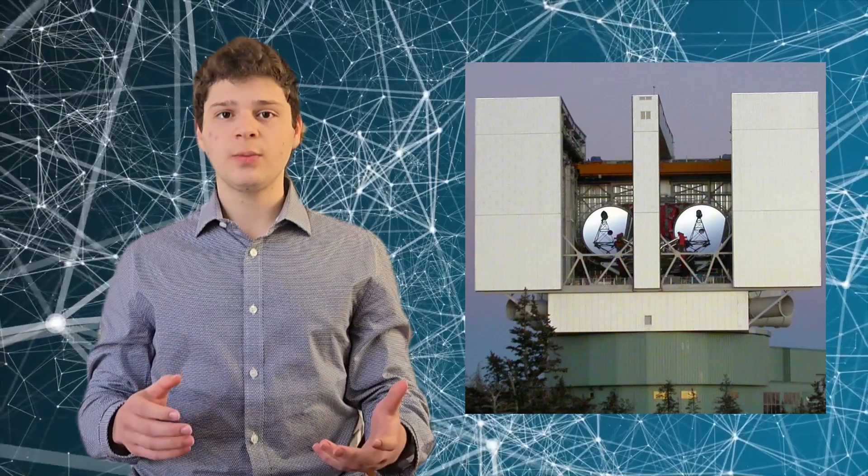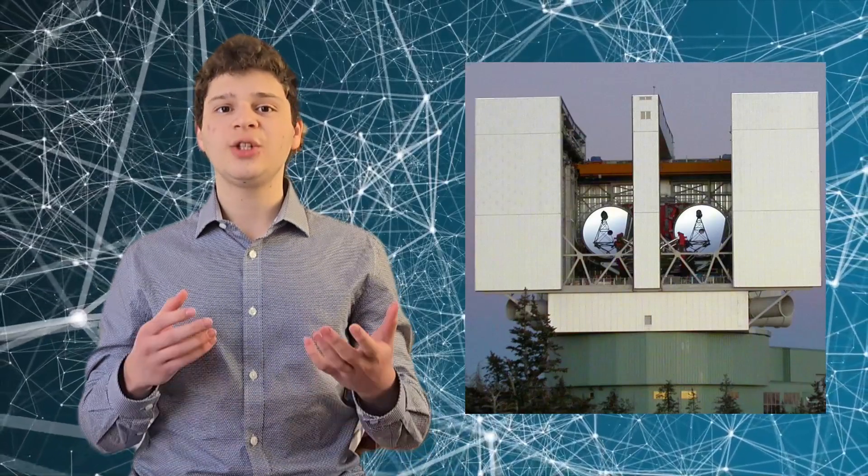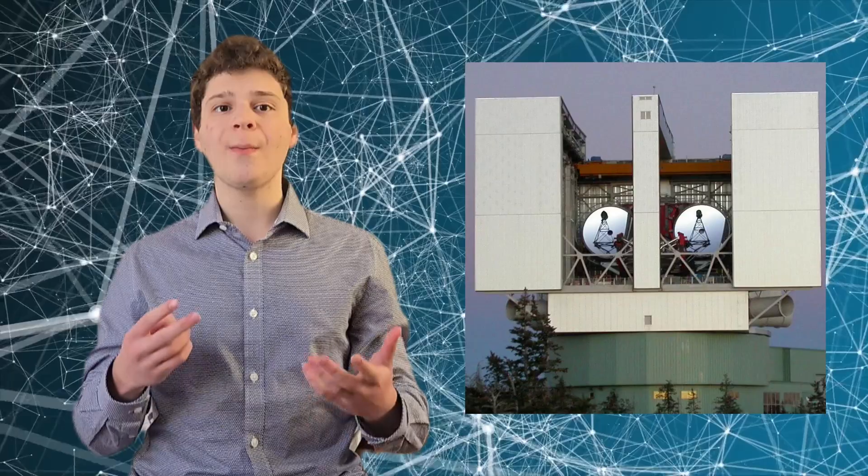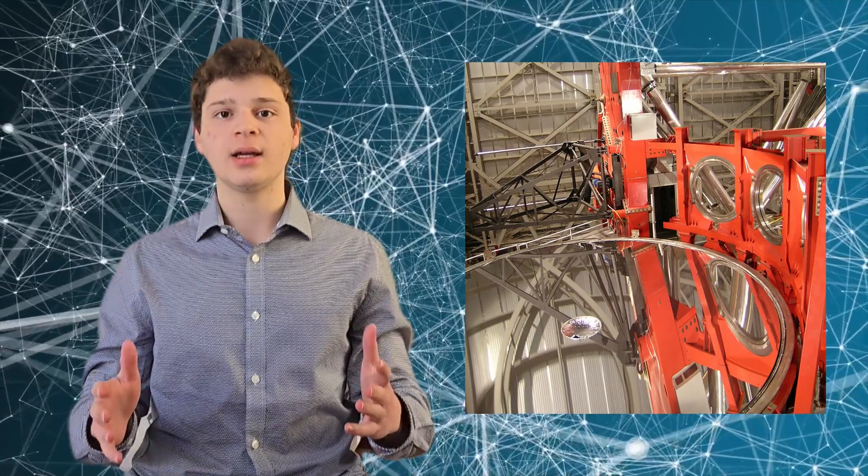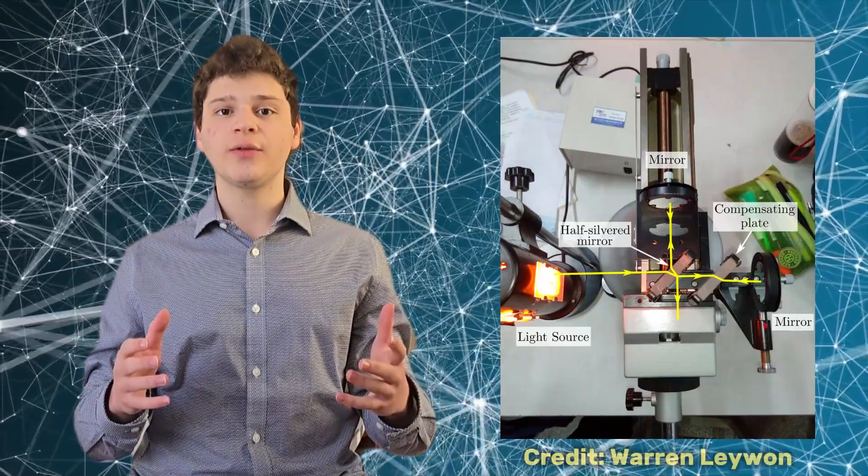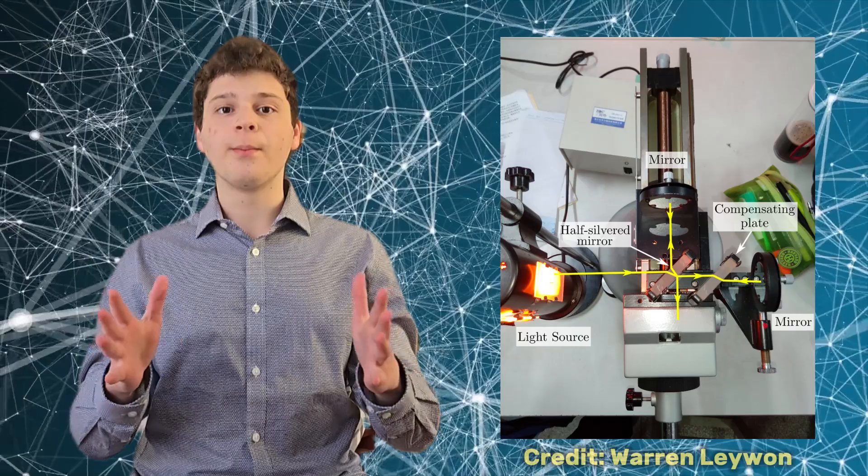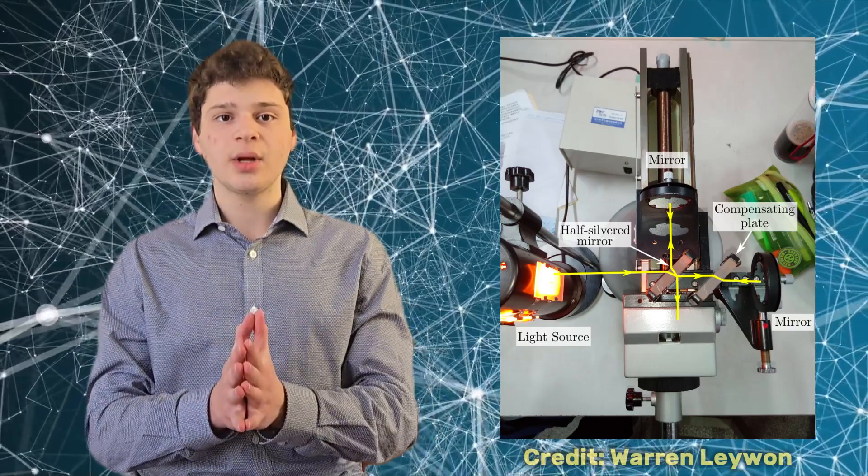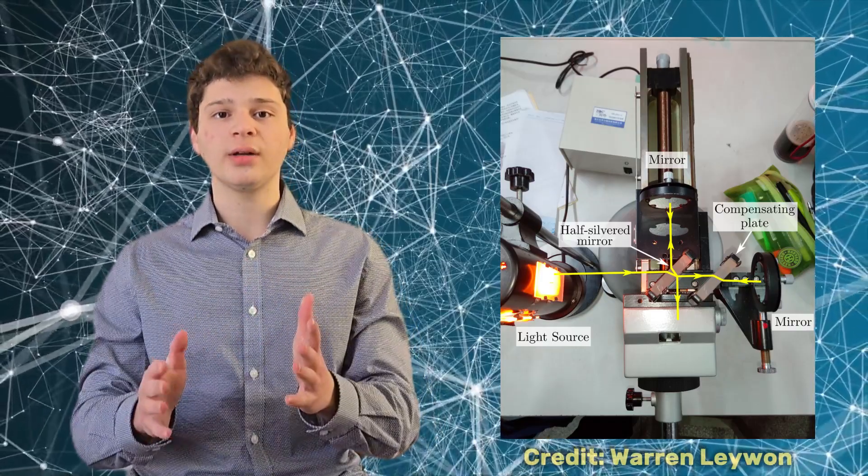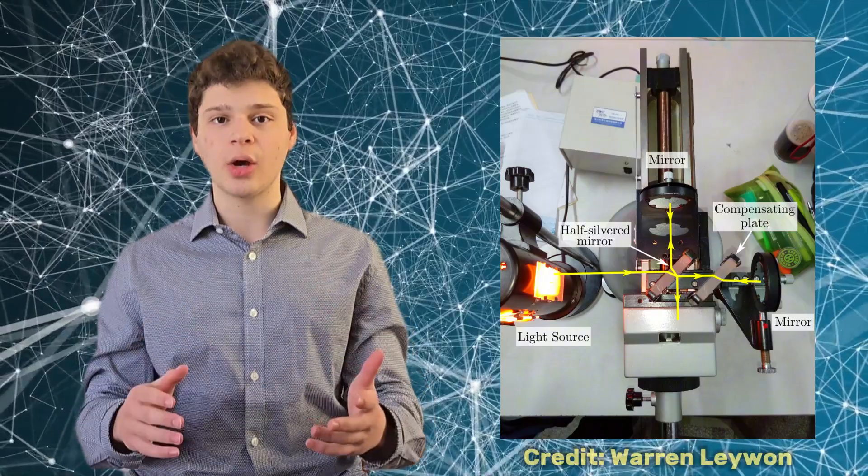The Large Binocular Telescope, where this research was conducted, is unique. It uses two massive 8.4 meter mirrors, functioning like two separate telescopes side by side. But the real game changer is the interferometer, which combines light from both mirrors. This setup achieves a resolution far greater than either mirror could manage alone.